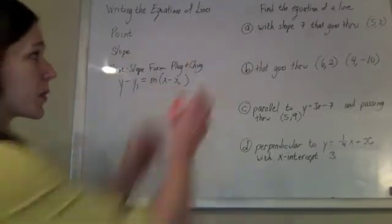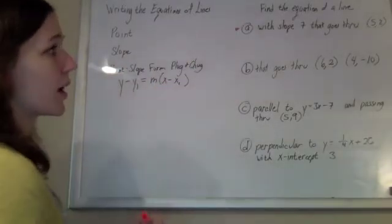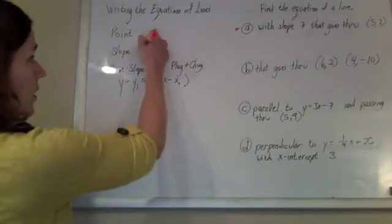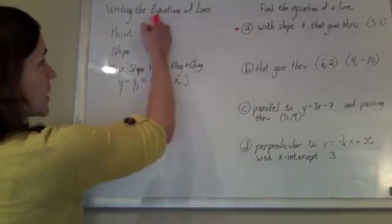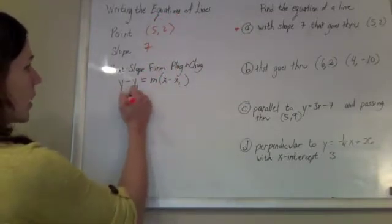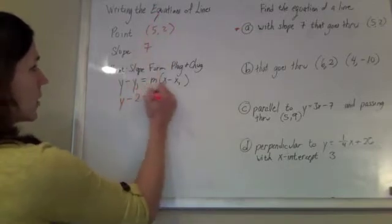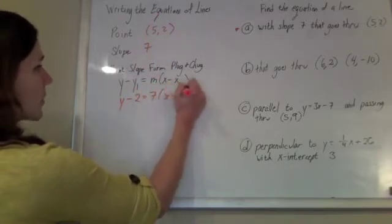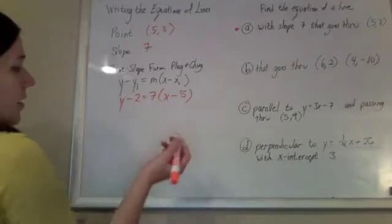So sometimes, like with this first example, it's very obvious. They give us a slope of 7, they hand us a point, 5, 2, we plug it in. y minus y1 equals m times x minus x1, and that's it.